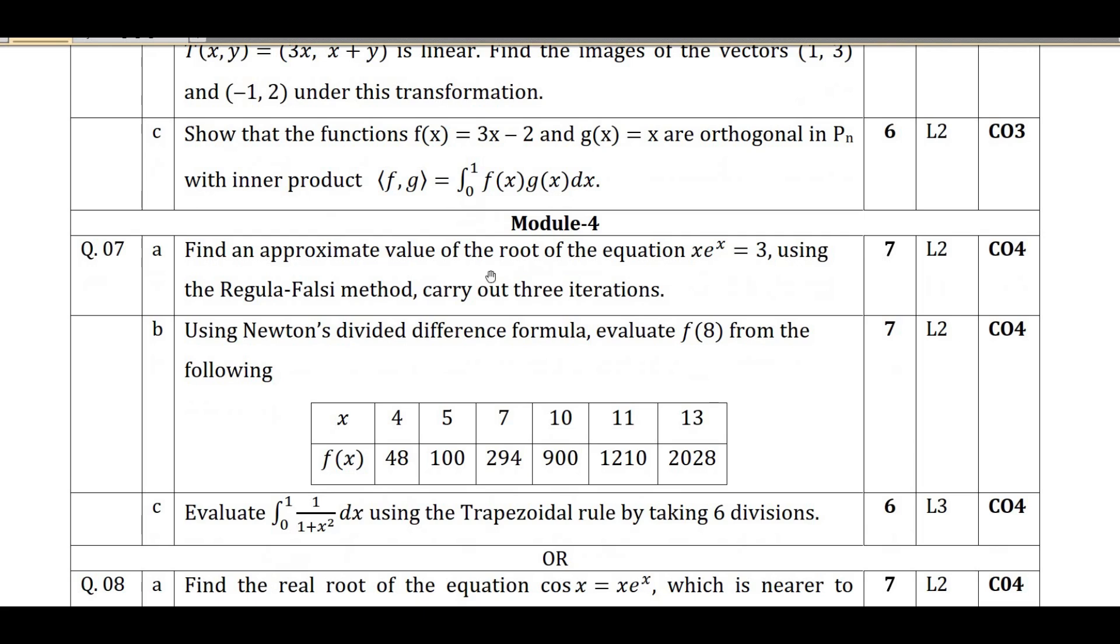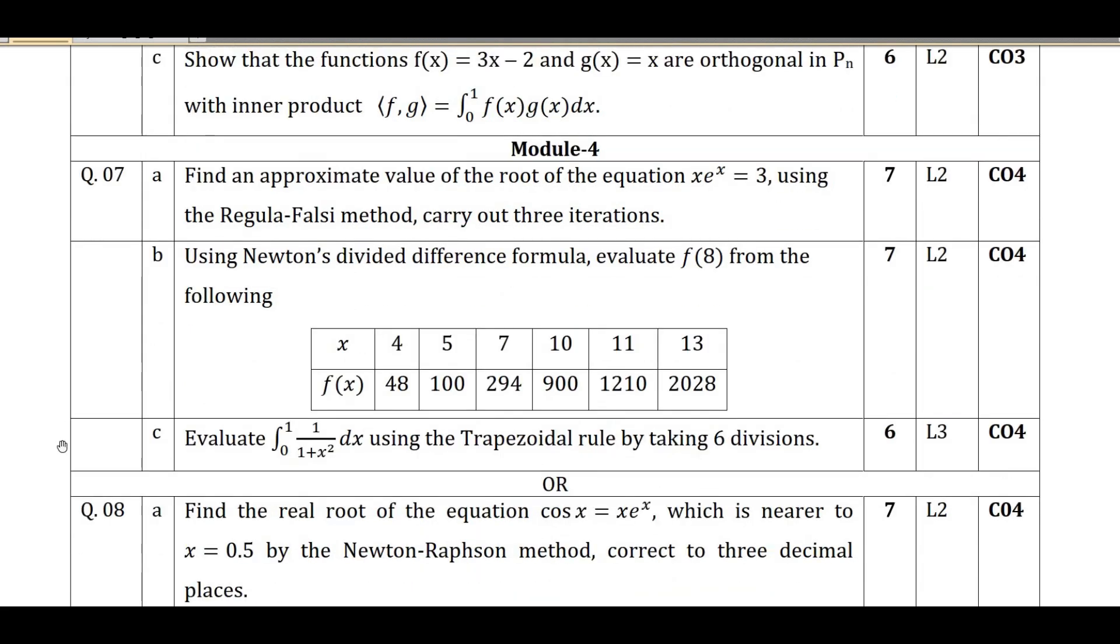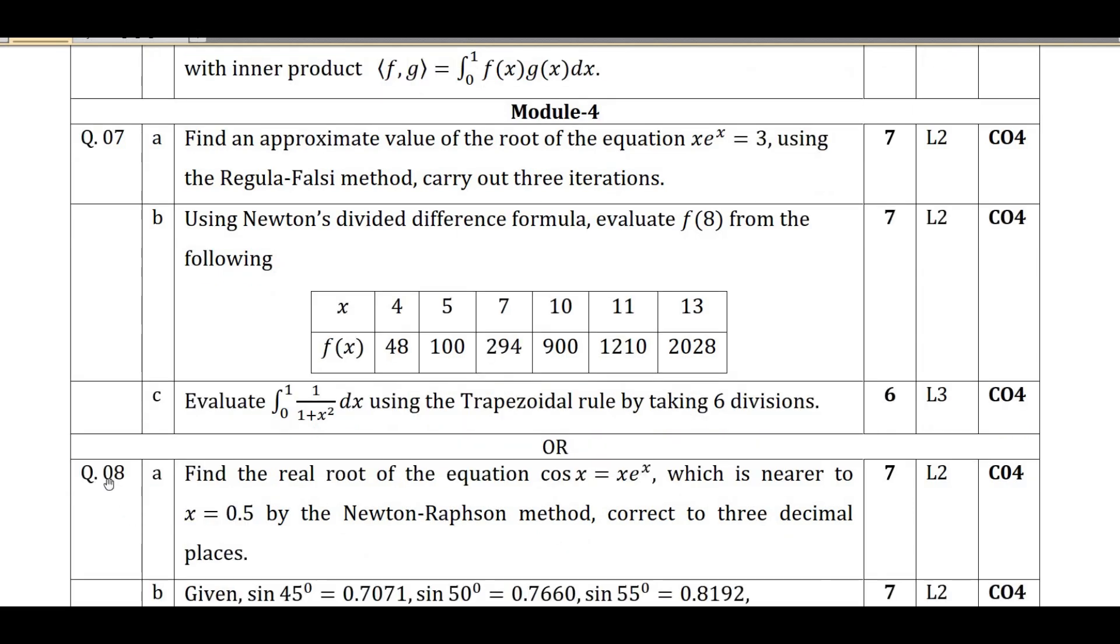I may solve all the problems or else I will go question wise. For the time being, I am going with question wise. I have chosen question number 8a. In that question number 8a, you have the problem as: Find the real root of the equation cos x equal to xe^(4x) which is near to x equal to 0.5 by the Newton-Raphson method correct to three decimal places. Let us see the solution for this.